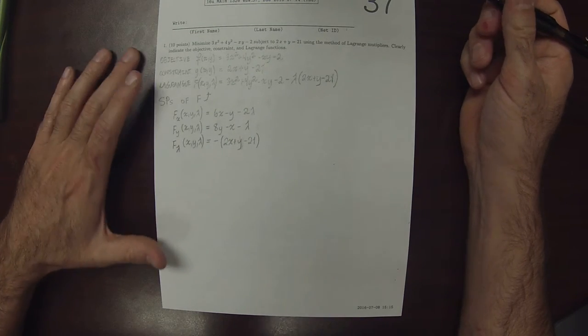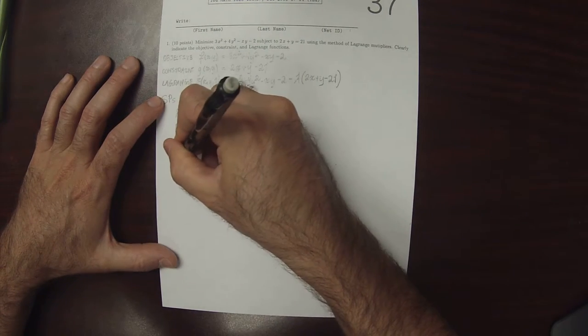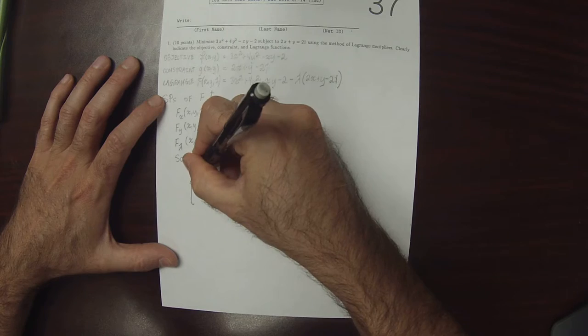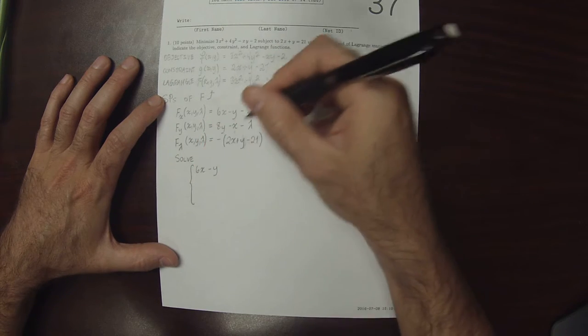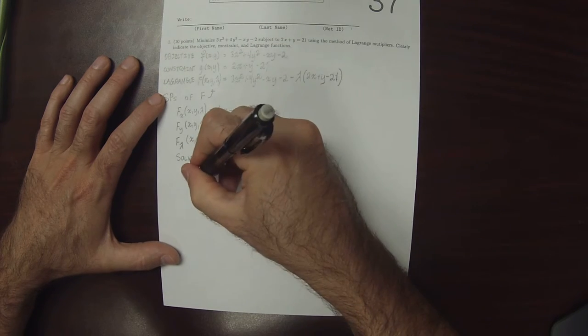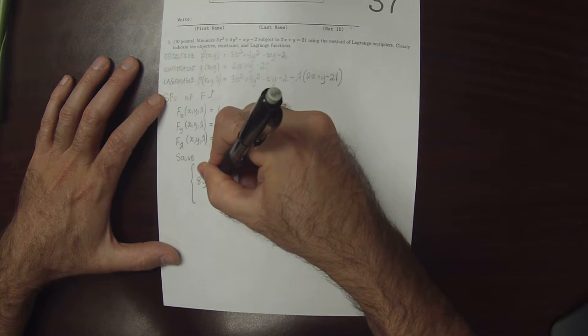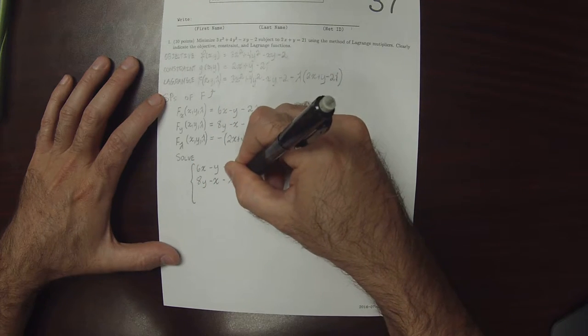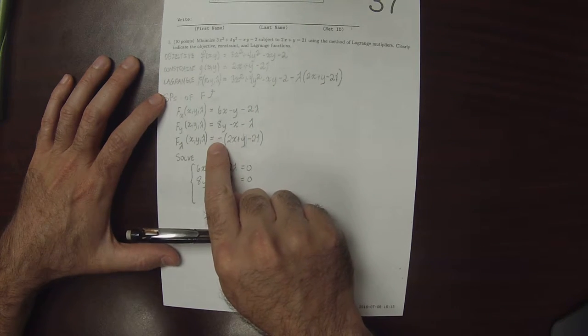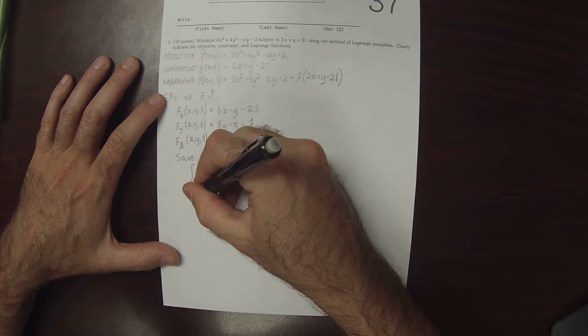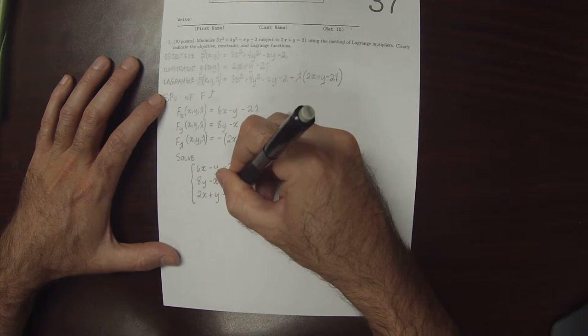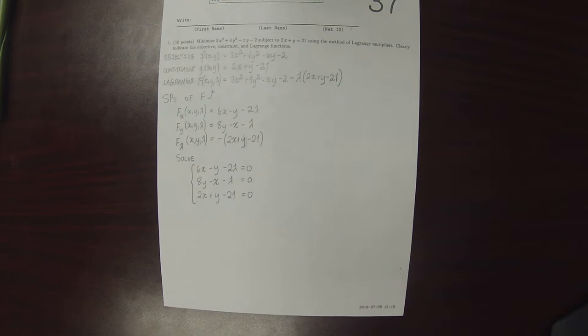So we want all three of these to be 0 at the same time. So we'll solve. So the first one, 6x minus y minus 2 lambda is 0. 8y minus x minus lambda is 0. And then 2x plus y minus 21 is 0. So we want to solve this equation.